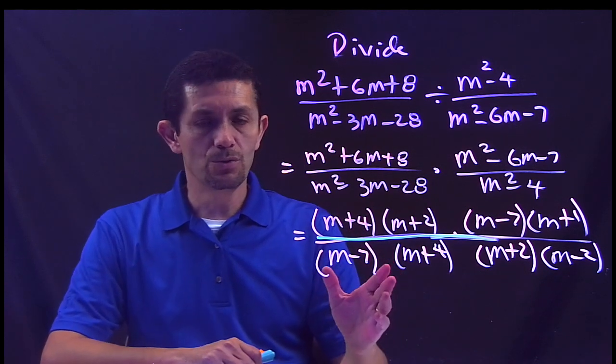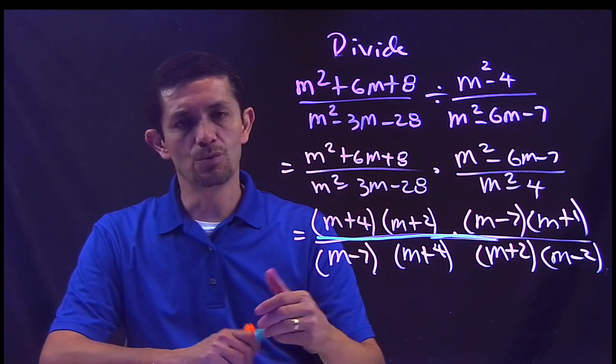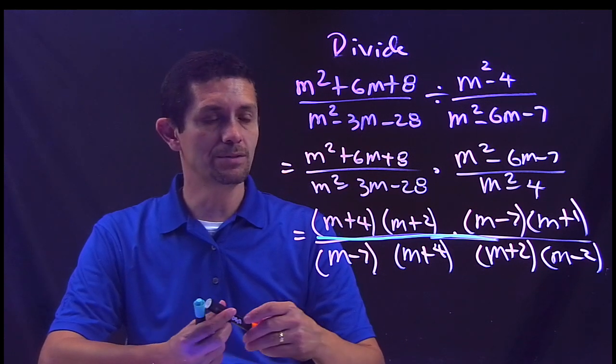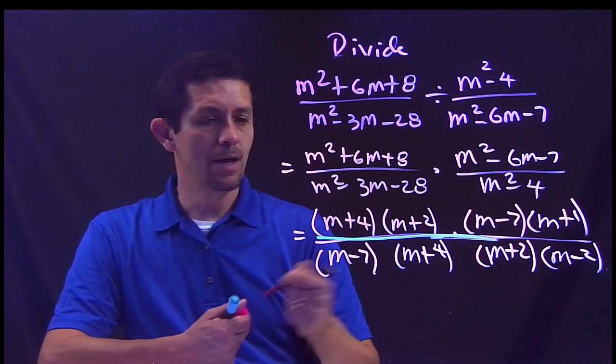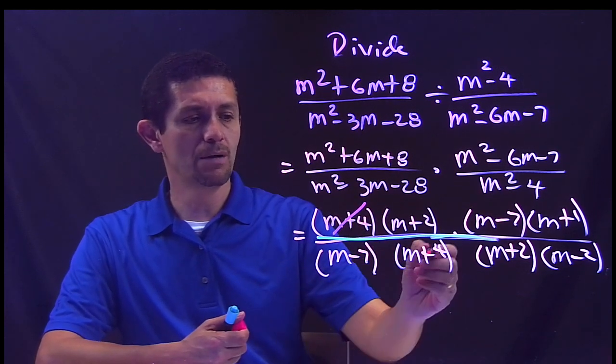Once we do this, now it's time to reduce, simplify. Okay, so let's check if there's anything you can simplify. Let's use pink. There you go: M plus 4, M plus 1 from the top, M plus 1 from the bottom, the whole factor.